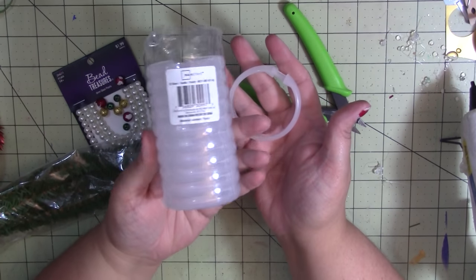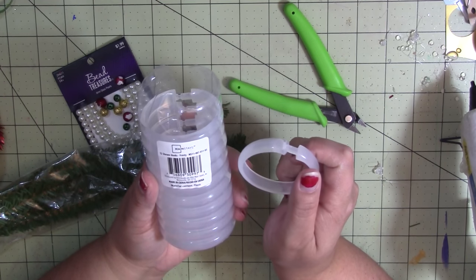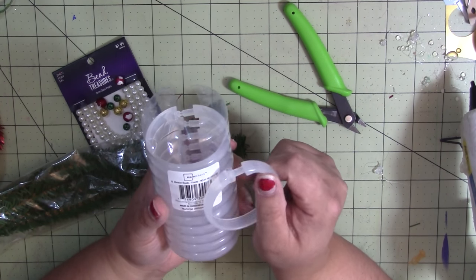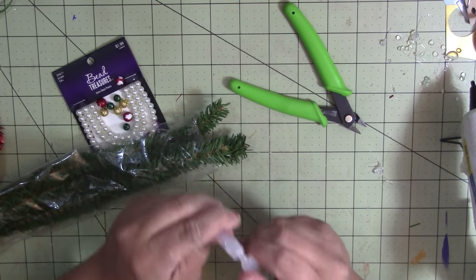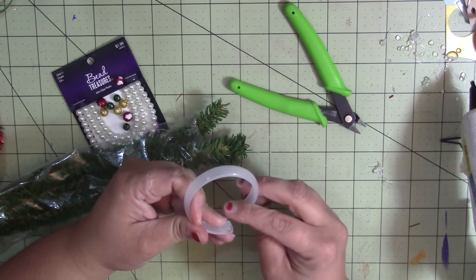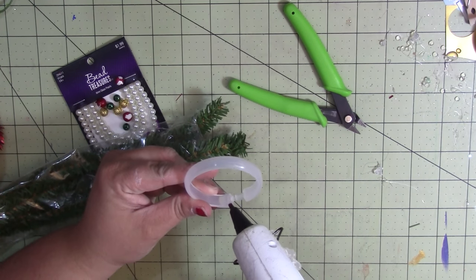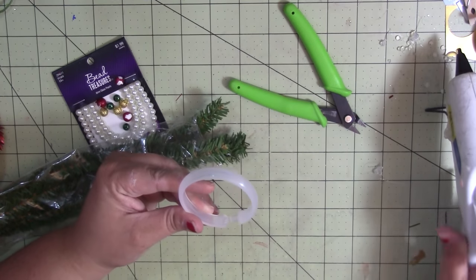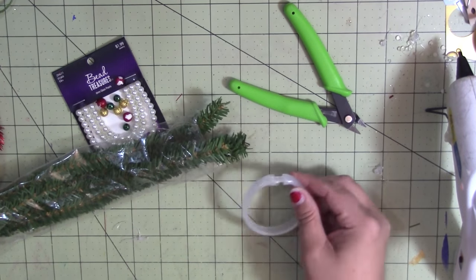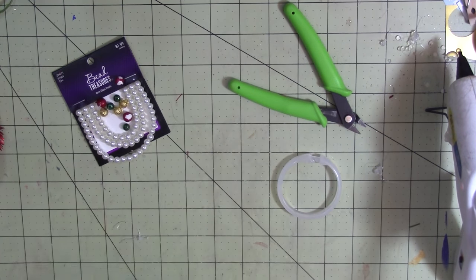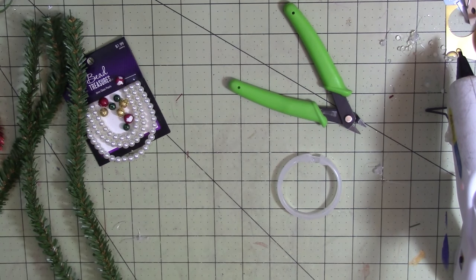These are Mainstays shower hooks from Walmart - I think I paid 98 cents for them. One thing I do that's probably unnecessary but makes me feel better: I squirt a little bit of hot glue in where it snaps together so I know it's not going to come apart. From my previous wreaths, you need four chenille stems to make a nice full wreath.